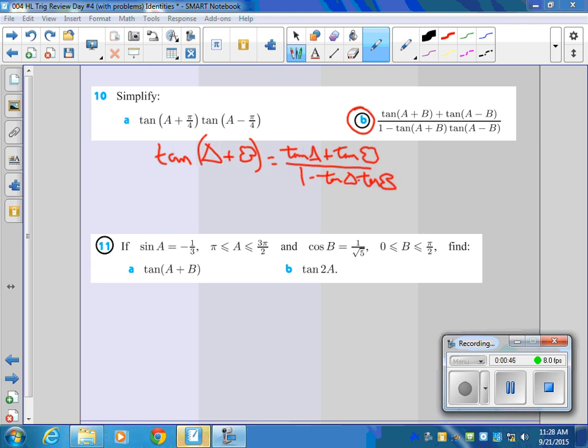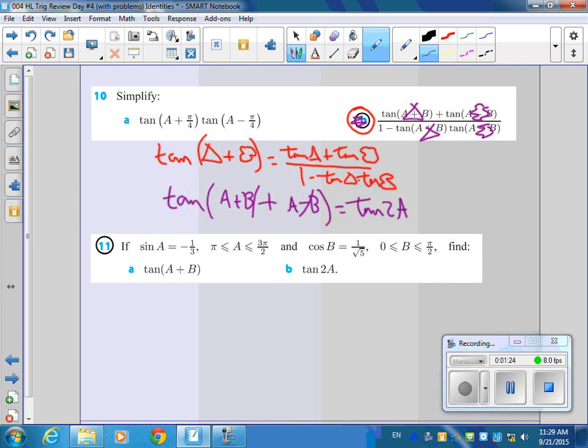Now, if you look at this problem here, 10B, this is my triangle and this is my blob. Can you see it totally matches this? So the tangent of triangle plus tangent of blob over 1 minus tangent triangle blob is the tangent of A plus B plus A minus B, which is really the tangent of 2A. That's what that simplifies down to.